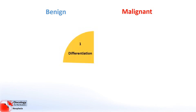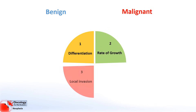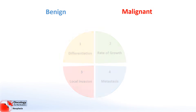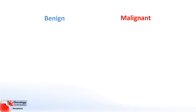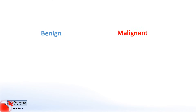These are: one, differentiation; two, rate of growth; three, local invasion; and four, metastasis. As we'll find out, the top two are general rules for which there are some exceptions. However, the bottom two are the real key differences that really define whether a tumor is malignant or benign.